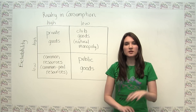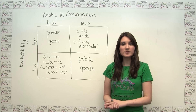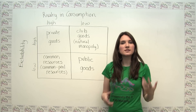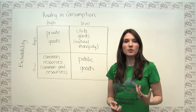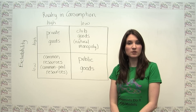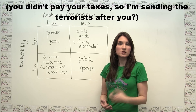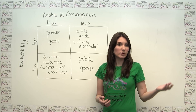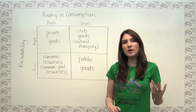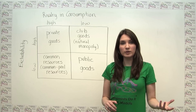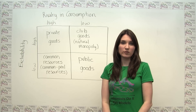Goods that are neither excludable nor rival are referred to as public goods. For example, national defense is the quintessential example of a public good, since it's virtually impossible to limit national defense to paying customers, and it costs essentially nothing on the margin to provide national defense to one more person. It's important to keep in mind that, while many public goods are in fact provided by government, public goods aren't called as such because they're provided by the government.